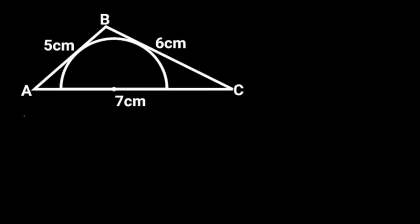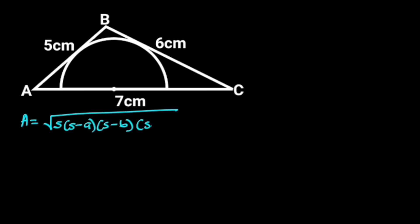To solve this problem, first let's find the area of the triangle. Since the three sides of the triangle are given, we are going to use Heron's formula. From Heron's formula, the area of the triangle is the square root of S times (S minus A) times (S minus B) times (S minus C), where S is (A plus B plus C) all divided by 2, and A, B, and C are the sides of the triangle.